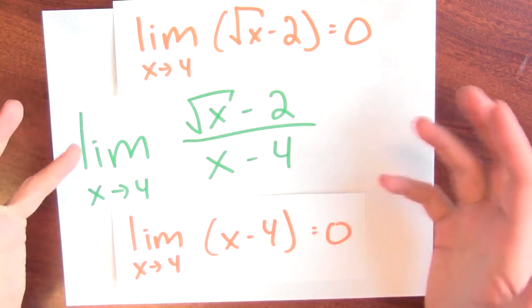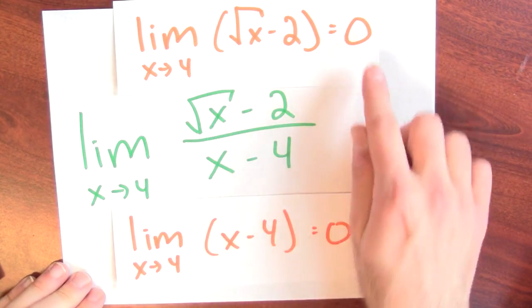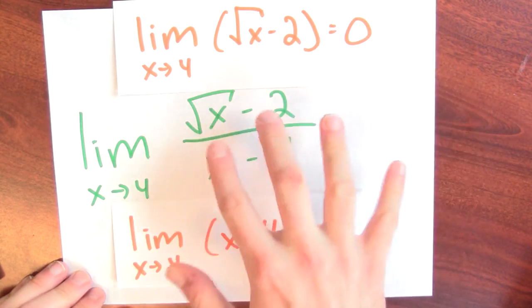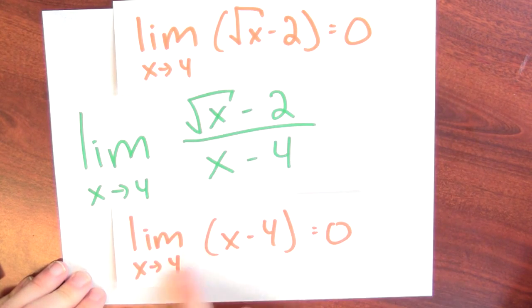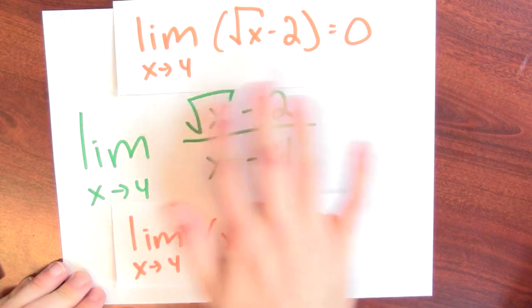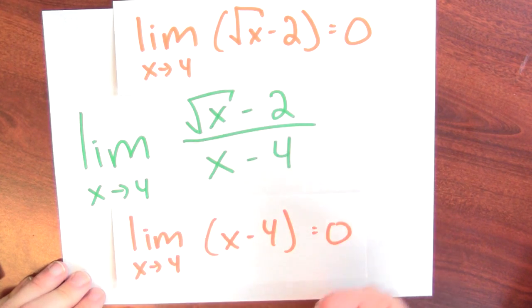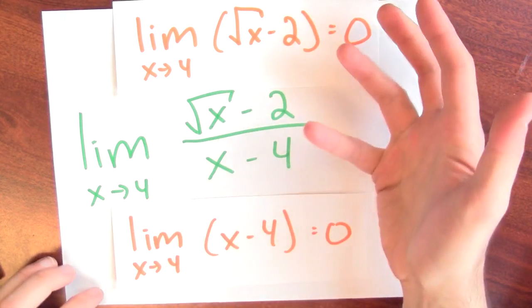The problem is that the numerator being close to 0 is trying to make this ratio small, but when the denominator is close to 0, it's trying to make this ratio really big. And neither the numerator nor the denominator win the game — those two forces balance off, giving the answer of 1/4.